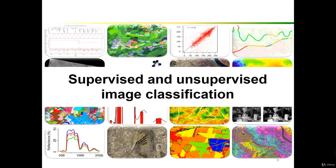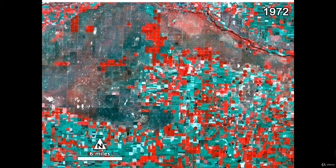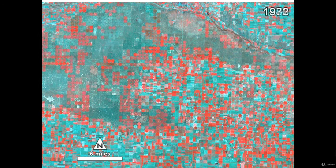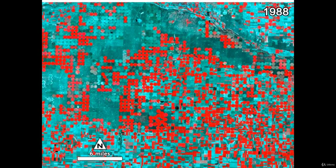You will learn main machine learning algorithms such as support vector machines, random trees, maximum likelihood, and ISO data, as well as how to implement these algorithms in the ArcGIS platform.